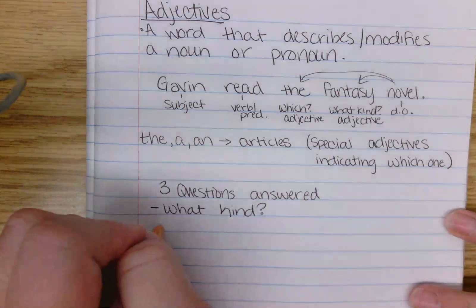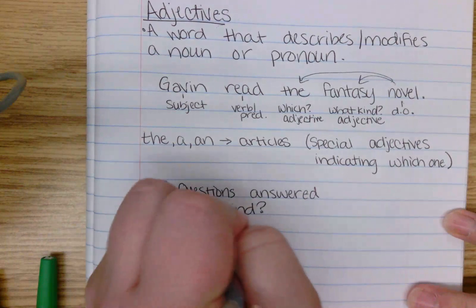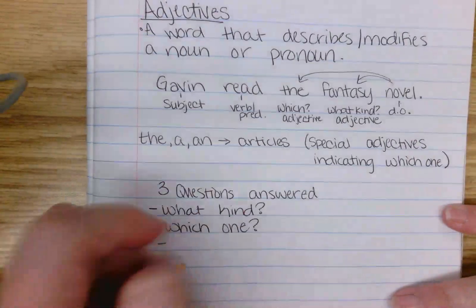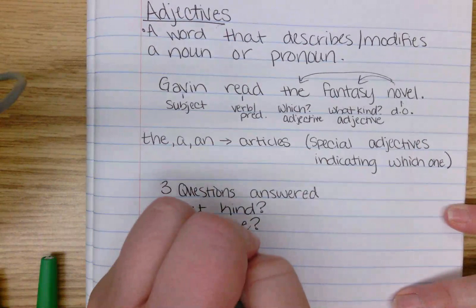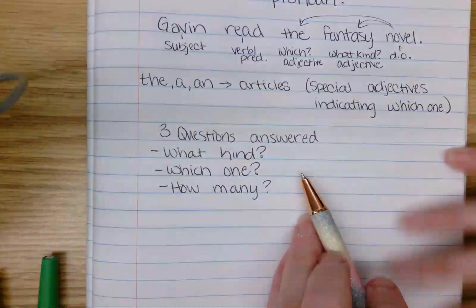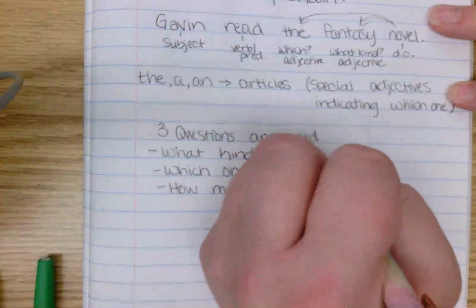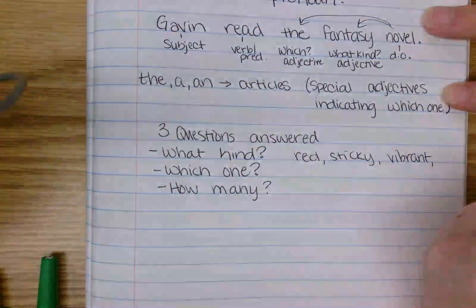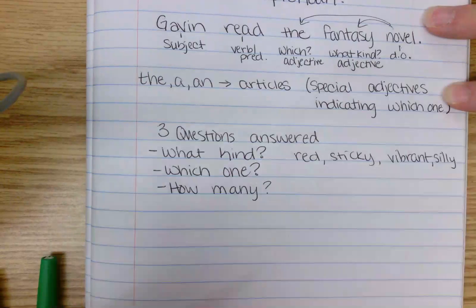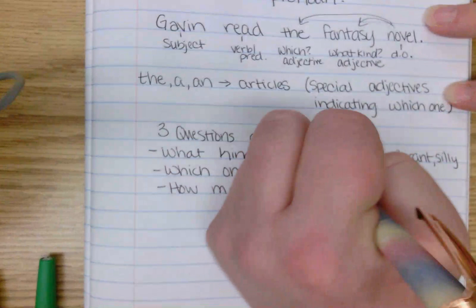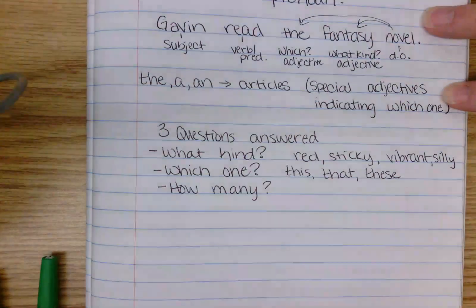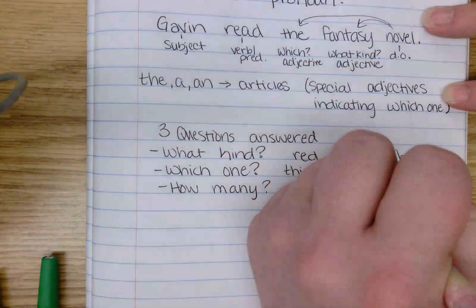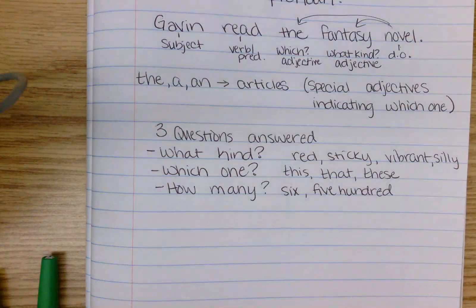Which one? Hold on to that. The last one is 'how many.' So: what kind — we have 'red,' 'sticky,' 'vibrant,' 'silly.' Which one? 'This one,' 'that one,' 'these.' How many? 'Six,' 'five hundred.' How many books does Miss Bowman have? Miss Bowman has 5,000 books.